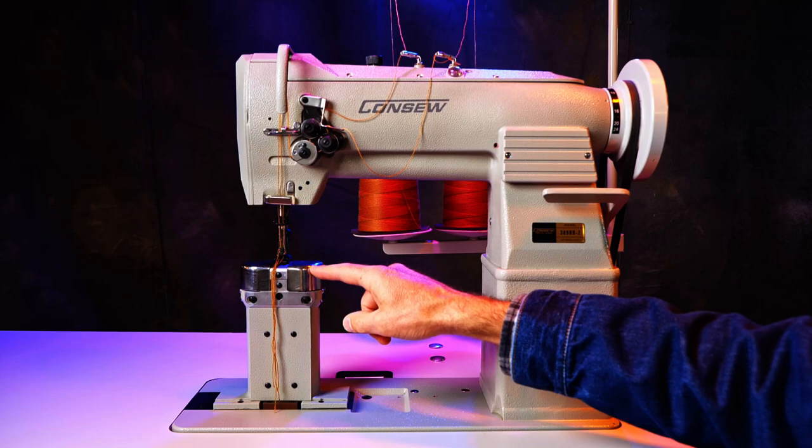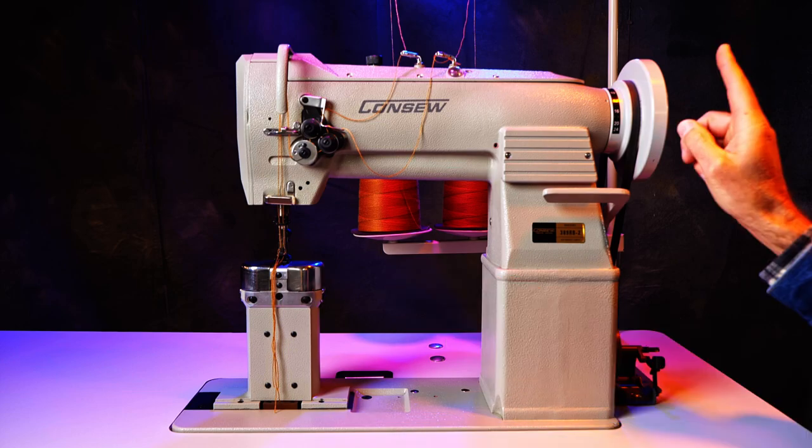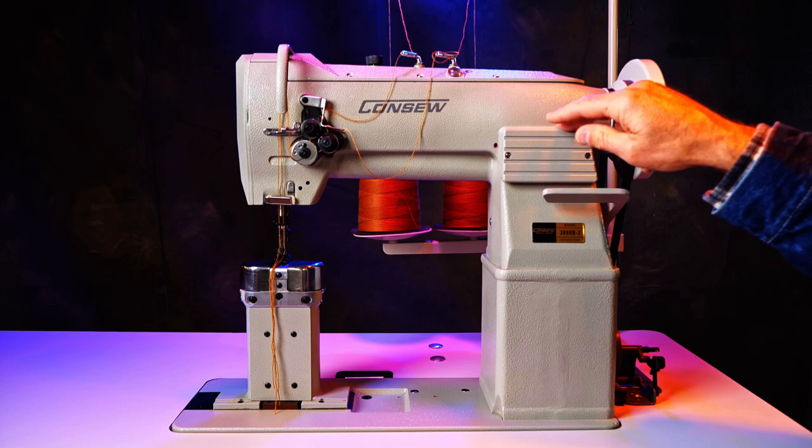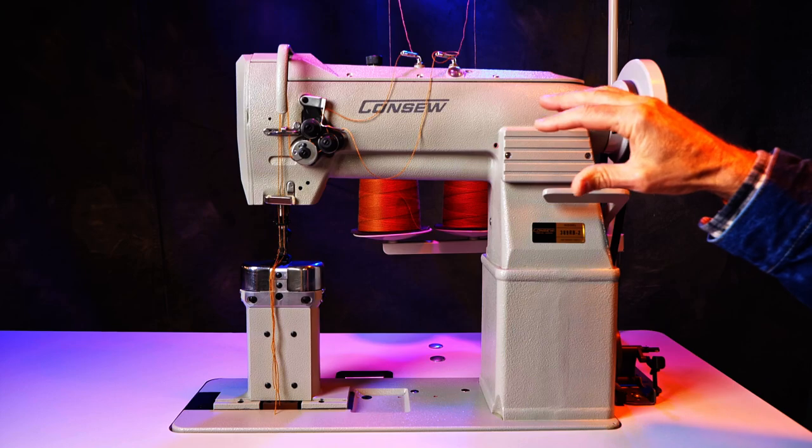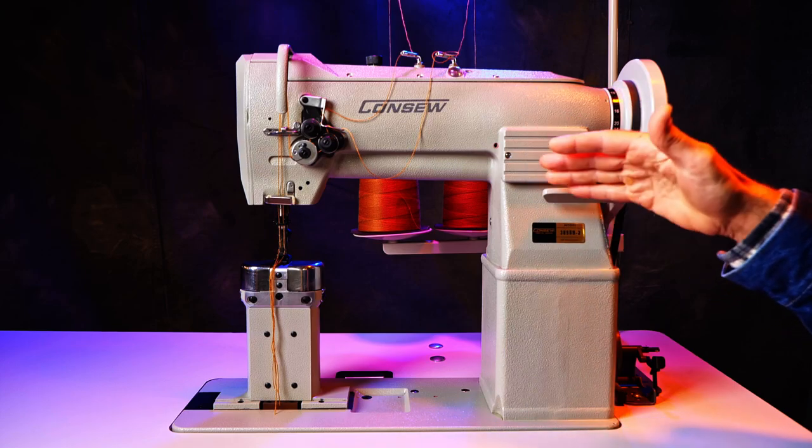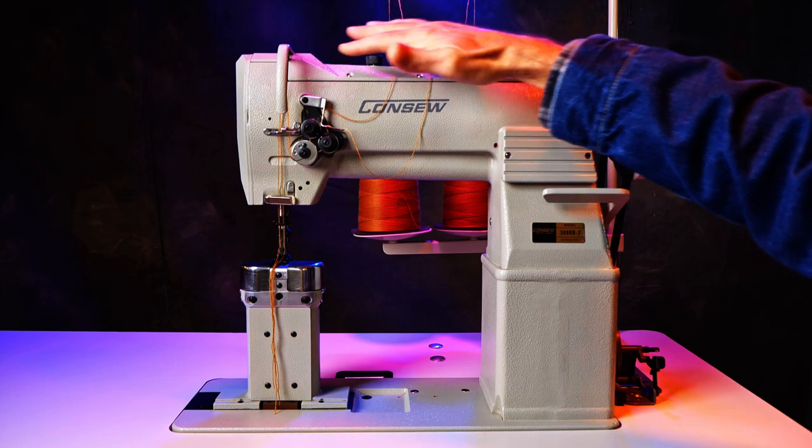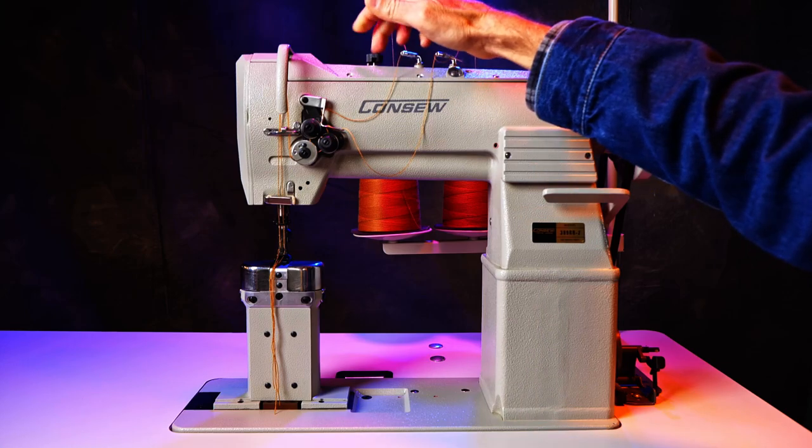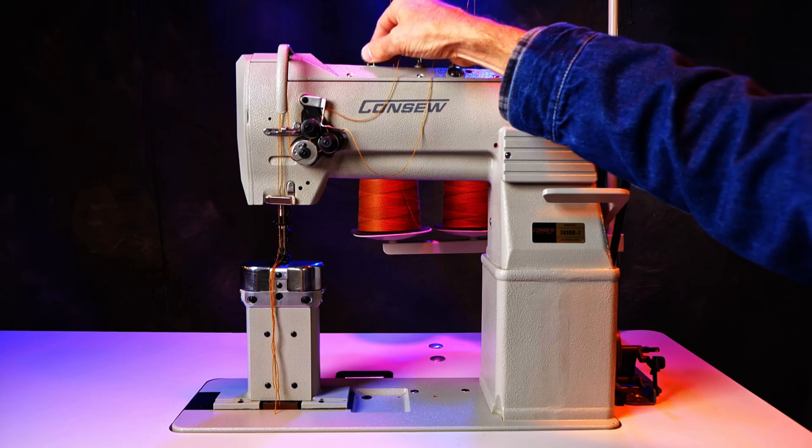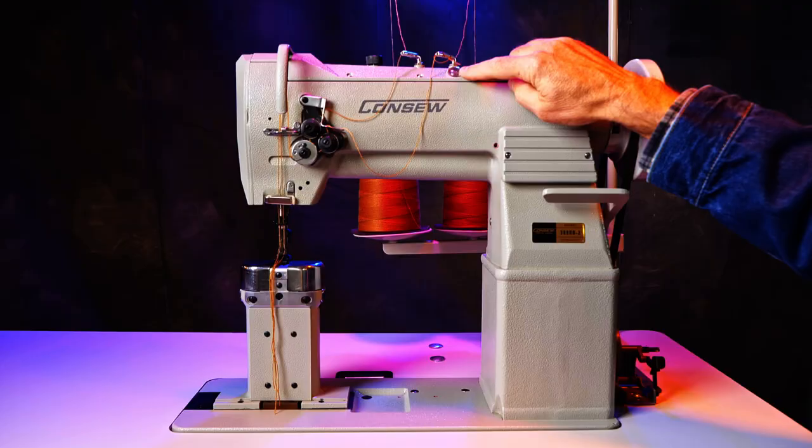This machine is triple feed, which means it has drop feed, needle feed, and walking foot. I'll put a card up here where I talk more about triple feed. The 389 has a semi-automatic lubrication system. Basically that means there are parts that need to be manually lubricated, and then there's an automatic feature that lubricates the top end parts. You engage that by opening this valve here, and when you're done you close it. There's a window right here where you can check your oil level.